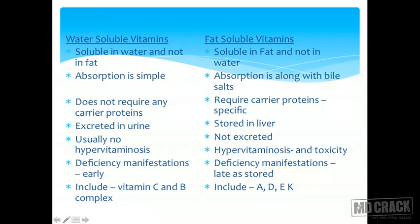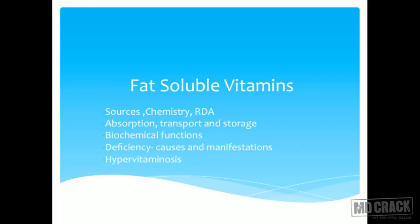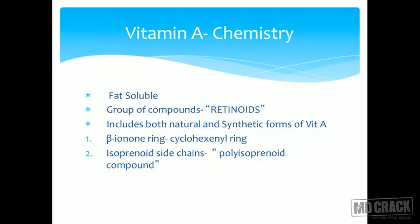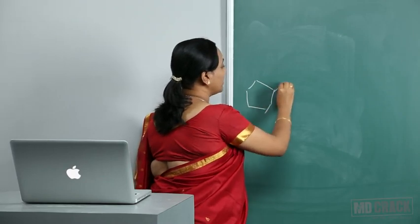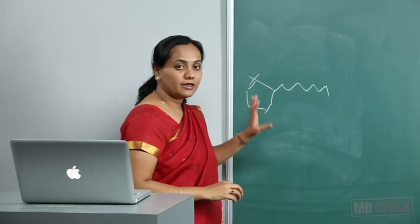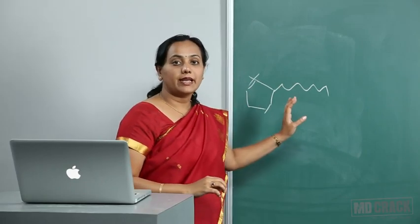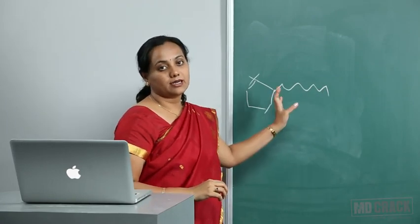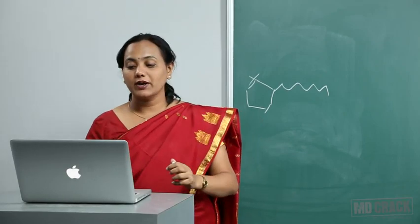Now let us start with the fat-soluble vitamins, beginning with vitamin A. For each vitamin, I will cover its sources, chemistry, RDA, absorption, transport, storage, biochemical functions, deficiency causes and manifestations, and hypervitaminosis. Vitamin A is fat-soluble and chemically contains a beta-ionone ring with a polyisoprenoid chain — it is the isoprenoid side chain that makes it a fat-soluble vitamin.